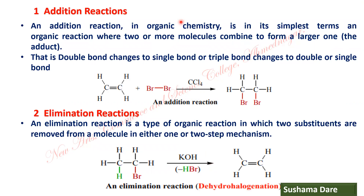First, what is addition reaction? In an addition reaction, if you are going to add a reagent on an unsaturated system, the degree of saturation increases — that means double bond changes to single bond. That type of reactions are called addition reactions.